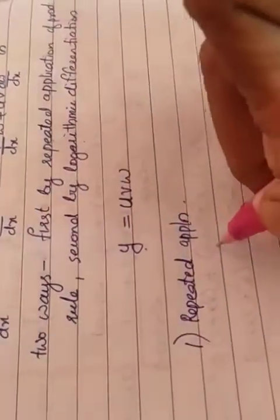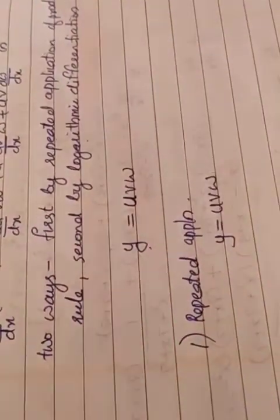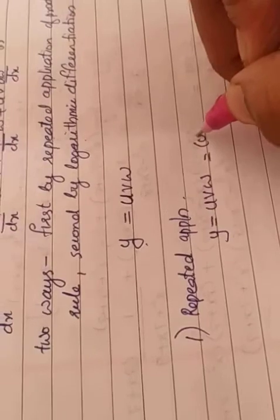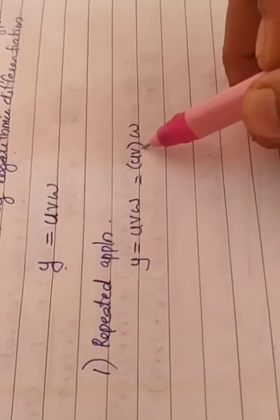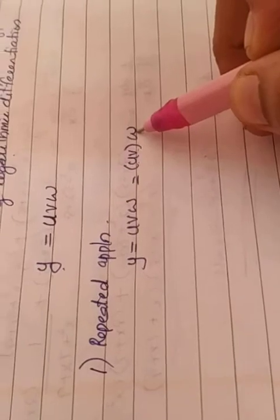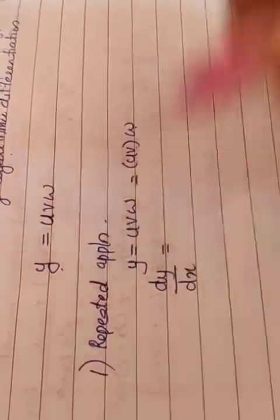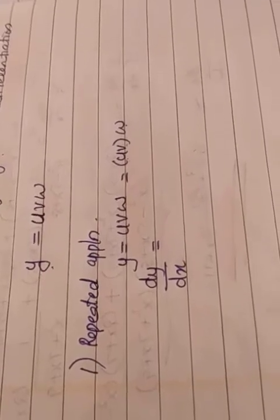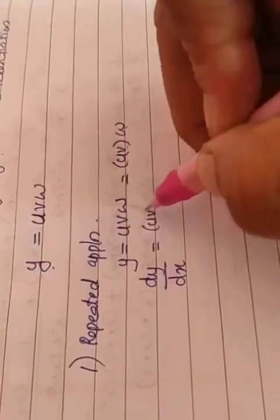So, what I will do is, I will again take y = uvw. In this case, I will take uv as a single function and w as another one. When we have to apply the product rule, there can only be two functions — that is the reason why I did this. uv I am treating as a single function, w as the second function. So, when we apply dy/dx, what is the product rule? First function into derivative of the second. Here, the first function is uv, because we took it together.